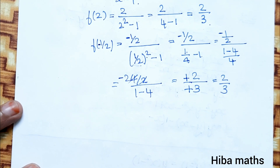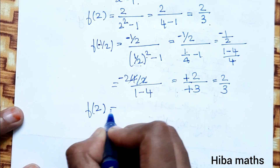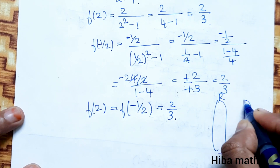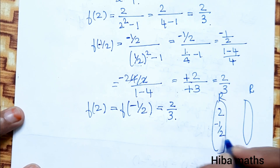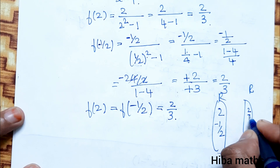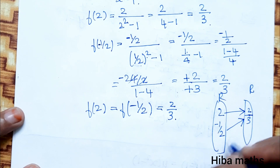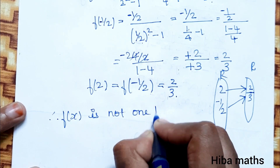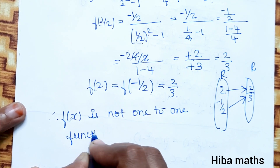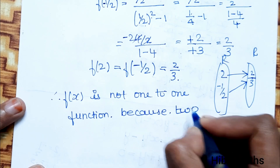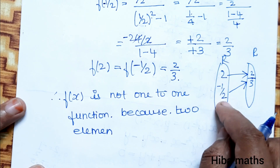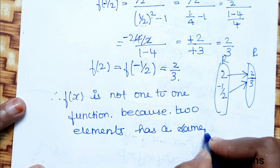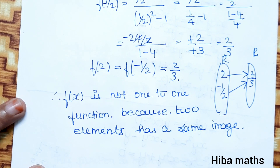So f(2) equals 2 by 3 and f(minus 1/2) equals 2 by 3. Both are equal. Since two different elements — 2 and minus 1/2 — have the same image 2/3, this means many-to-one mapping is occurring. Therefore f of x is not a one-to-one function, because two distinct elements have the same image.